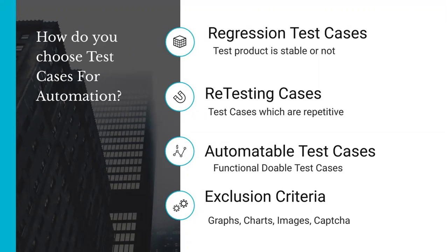You should tell what all is eligible for automation and what all is not eligible for automation. Basically, all the functional doable test cases are eligible for automation — choose those first. Then you can go for complex cases like starting and stopping services, or graphs and charts, but those would take a lot of time, so it is better to keep them for manual testing only.